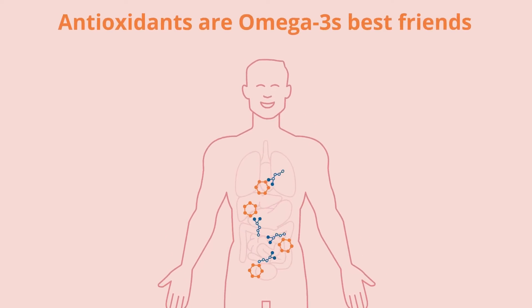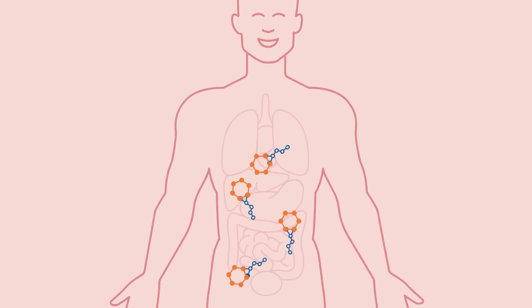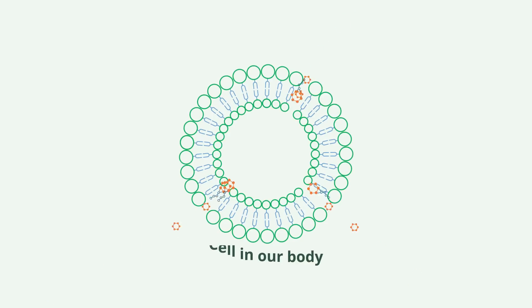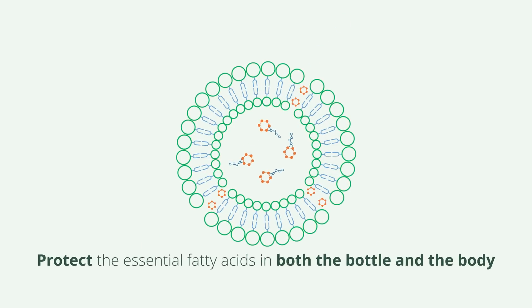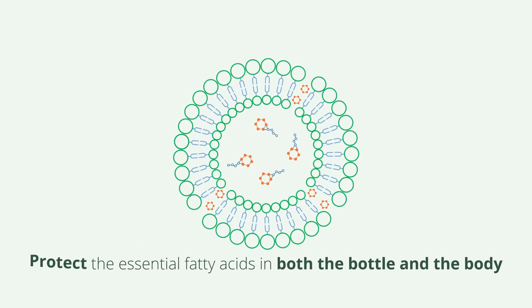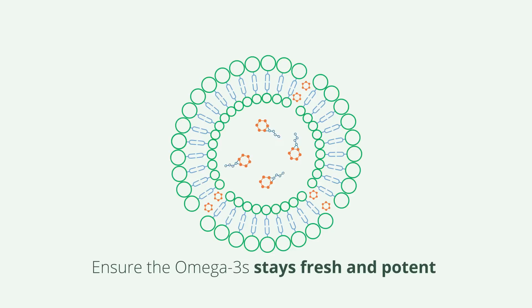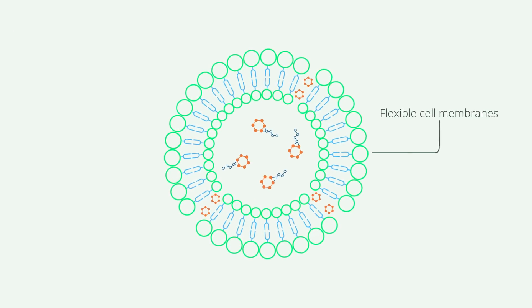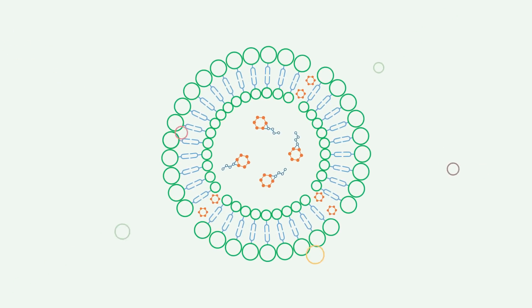Antioxidants are omega-3's best friends. Here's a close-up look of a cell in our body. Antioxidants protect the essential fatty acids in both the bottle and the body. They ensure the omega-3s stay fresh and potent, and they will keep the cell membranes flexible to absorb the nutrients in the food.